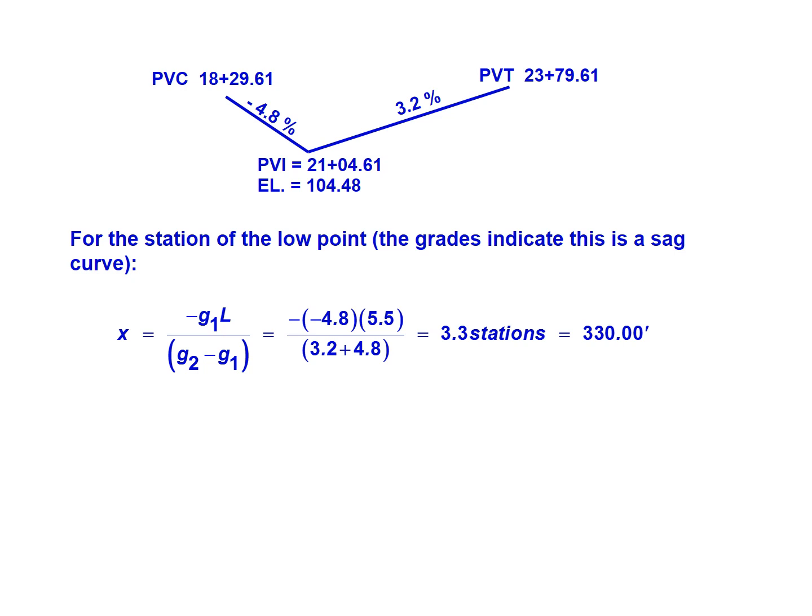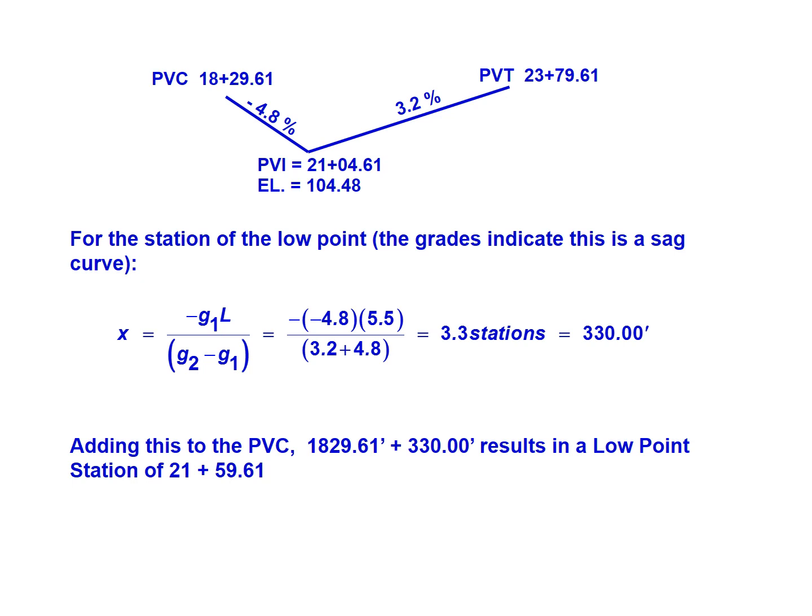This holds true: the low point location falls on the side of the PVI with the flatter grade. The 3.2 percent grade is flatter than the 4.8 percent grade, so we expect the low point to occur on the right side of the PVI in this example. Adding 3.3 stations (330 feet) to the PVC station gives a low point station of 21+59.61. It's important to do this final step so we know the low point location in the broader project stationing context.